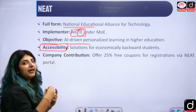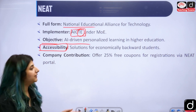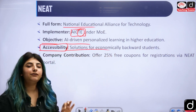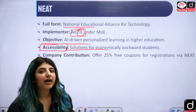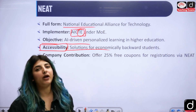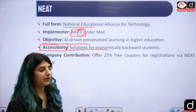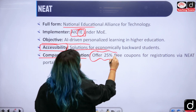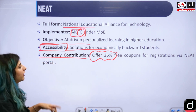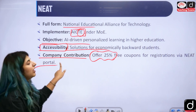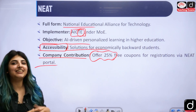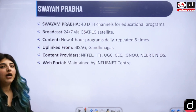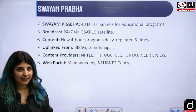Regarding accessibility under NEAT, solutions will be provided for free to economically backward class students enrolled in technical programs. Additionally, companies will offer 25% free coupons for registration via the NEAT portal — a discount available when you enroll under this scheme for higher education.